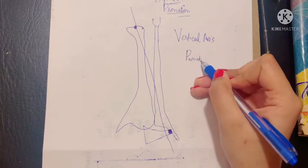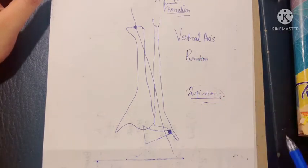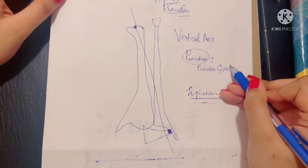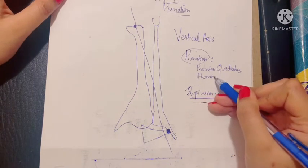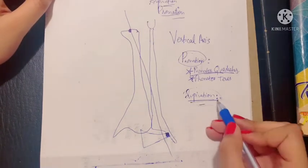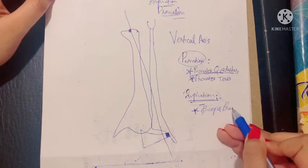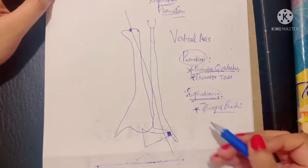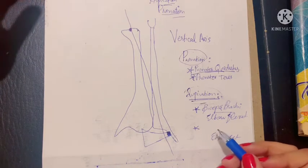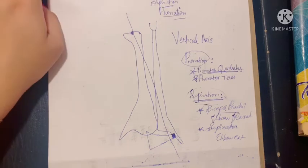Supination is a more powerful movement than pronation because it is an anti-gravity movement. Pronation is carried out mainly by the pronator quadratus, assisted by the pronator teres. The chief supinator is the biceps brachii, especially when supination occurs with the elbow joint flexed. When the elbow is extended and only slow supination is required, the supinator muscle carries out the movement.